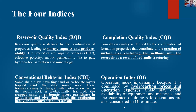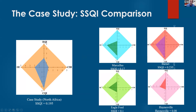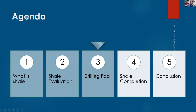The Sweet Spot Quality Index definitions describe what Reservoir Quality Index, Completion Quality Index, Conventional Behavior Index, and Operation Index each represent. I was comparing a shale play from the Western Desert of Egypt with shale plays in the United States — Marcellus, Barnett, Eagle Ford, and Haynesville — all good shale plays in the US — to see how the Egyptian location compares.